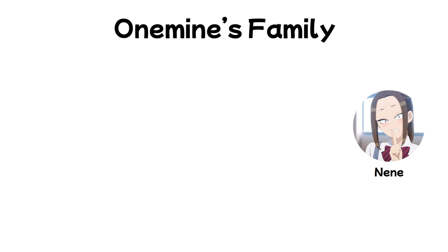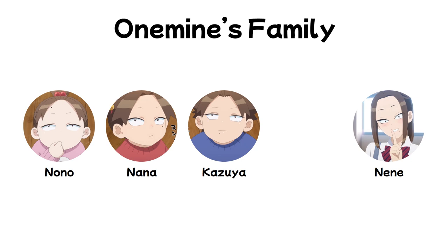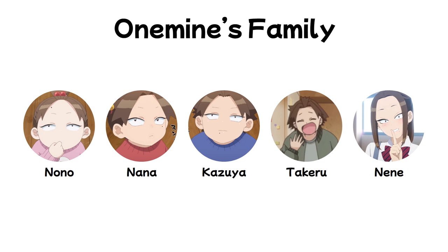Next up is Onemine-san's family. Her younger sisters are named Nono and Nana, obviously named after their older sister Nene. Her youngest brother is named Kazuya. She also has another brother who goes unnamed in the anime, though according to the official fan book his name is Takeru. You'd think the brothers' names would be Nunu and Nini to go with Nene, Nana, but apparently not.